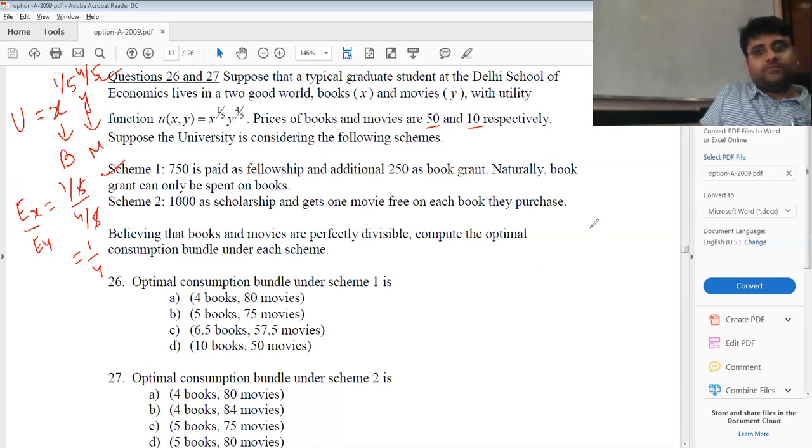Let's take X as the number of books, Y is the number of movies. So 250 is the book grant. Since books are a good commodity, you will be spending the entire 250 on the books.